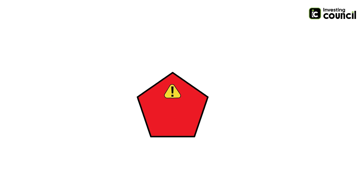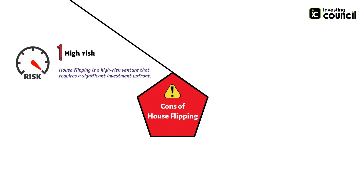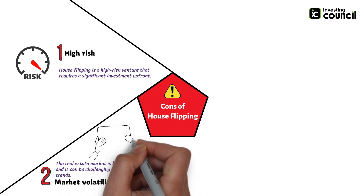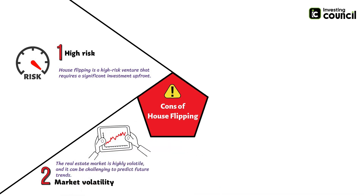Now let's explore the cons of house flipping. The top disadvantage is high risk — house flipping is a high-risk venture that requires significant upfront investment with no guarantee of profit. If market conditions change, the flipper may end up losing money. The second disadvantage is market volatility: the real estate market is highly volatile and difficult to predict. Flippers depend on market conditions when selling, and if the market takes a downturn, the property may not sell at the desired price.